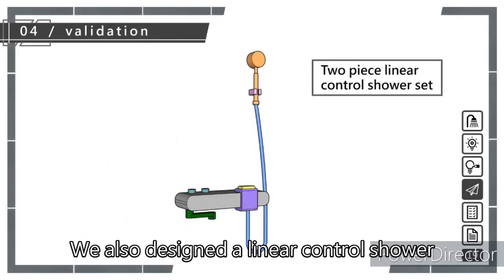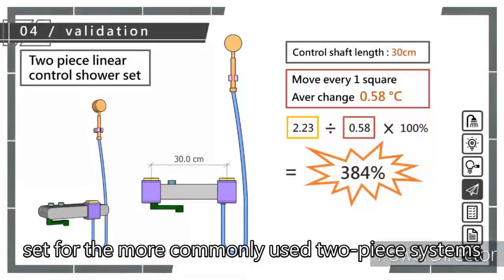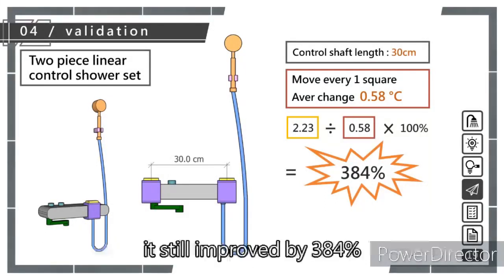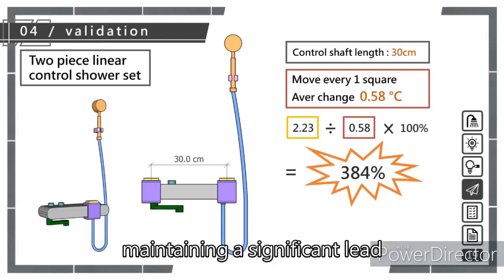We also designed a linear control shower set for the more commonly used two-piece systems. Despite a reduced control axis length of 30 cm, it still improved by 384% compared to traditional systems, maintaining a significant lead.